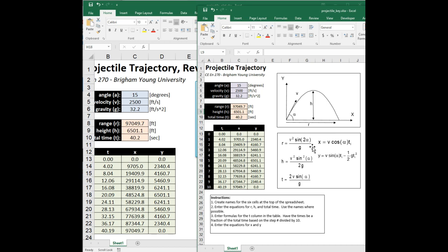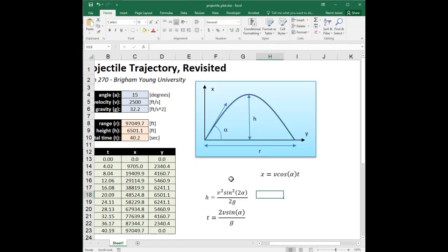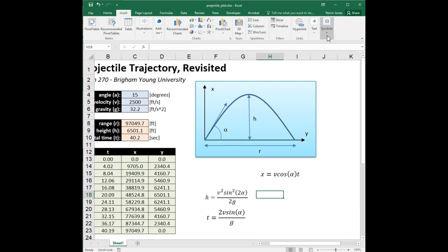So how do you create an equation from scratch? I'm going to pop up the original version of this. We want to create this equation: R equals v squared sine 2 alpha over G.